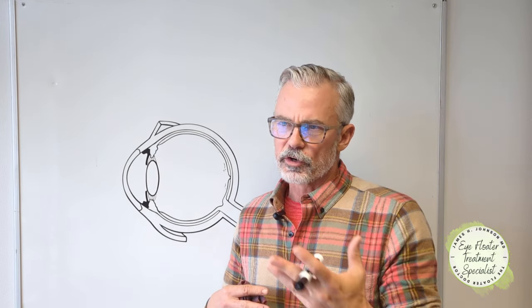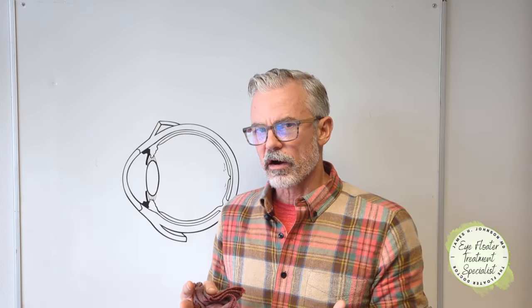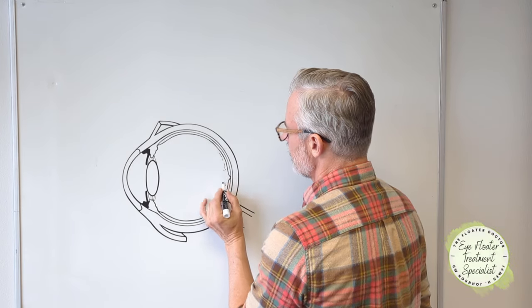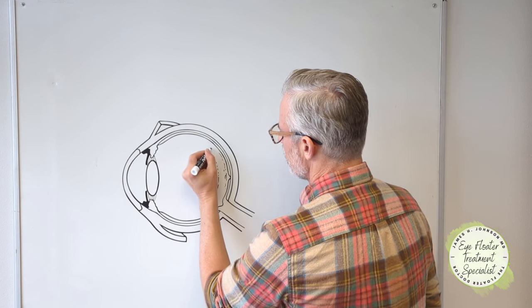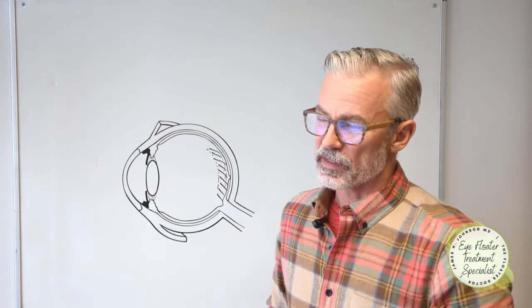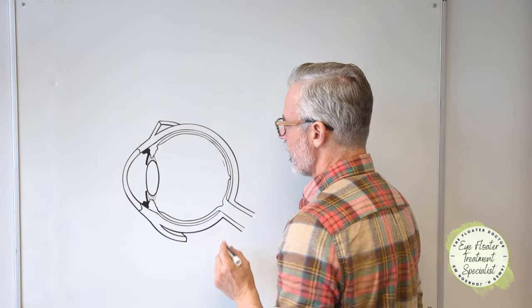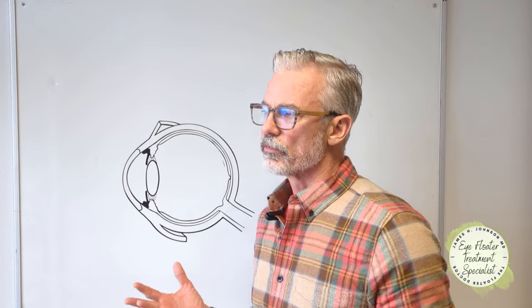For the younger group — roughly 35 and under — we have floaters that are very difficult to find, and there's a disconnect between how bothersome they are to you and how difficult they are for us to see. These floaters tend to be very small, thin, wispy, transparent fibers, generally very close to the retina — within about one to one-and-a-half millimeters — which is a zone you can't reach with the laser. Floaters don't have to be big to be bothersome, and sometimes even as the Floater Doctor looking specifically for them, I just can't find them. This is a real frustrating problem for younger patients.